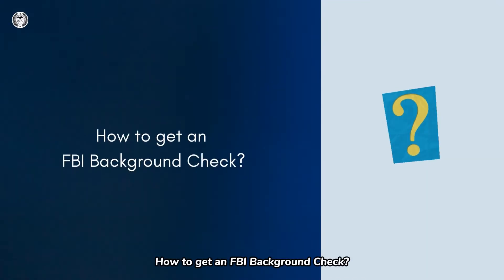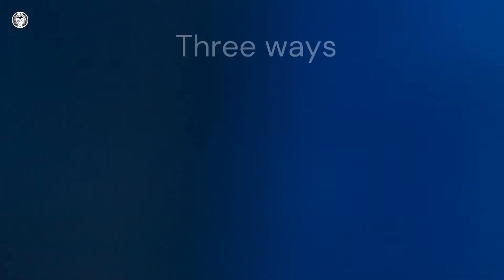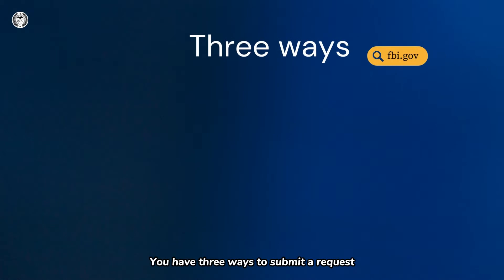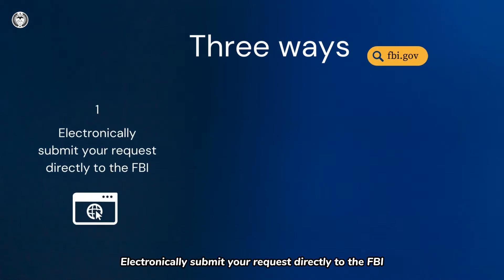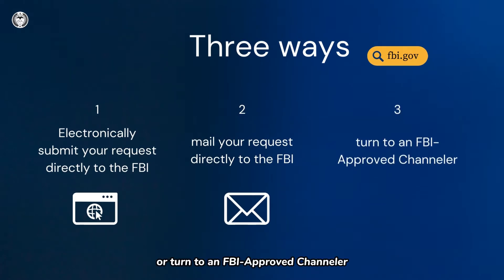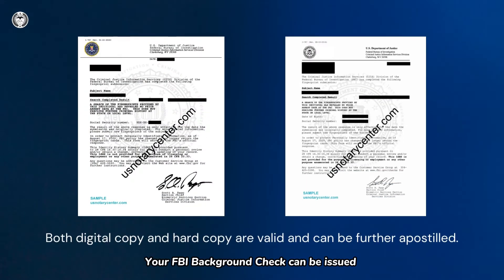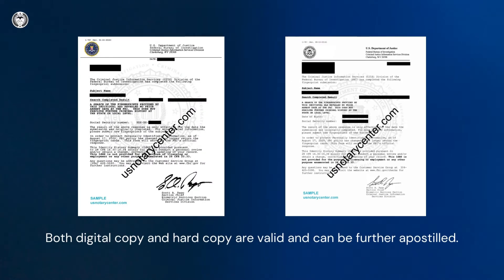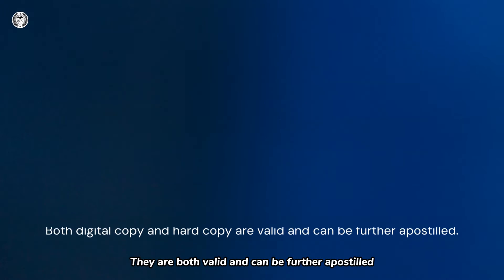How to get an FBI Background Check? You have three ways to submit a request: electronically submit your request directly to the FBI, mail your request directly to the FBI, or turn to an FBI-approved channeler. Your FBI Background Check can be issued in a digital copy, PDF format, or a hard copy. They are both valid and can be further apostilled.